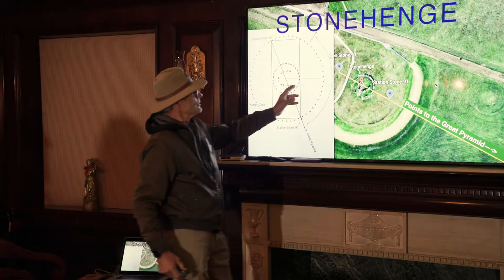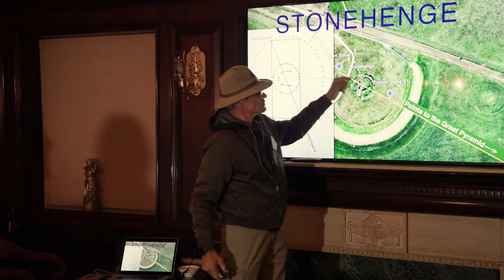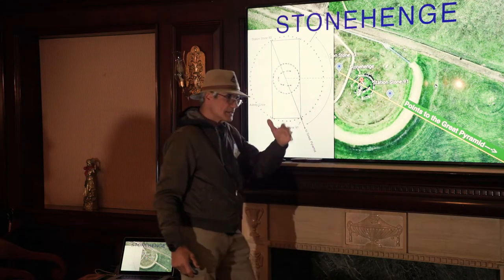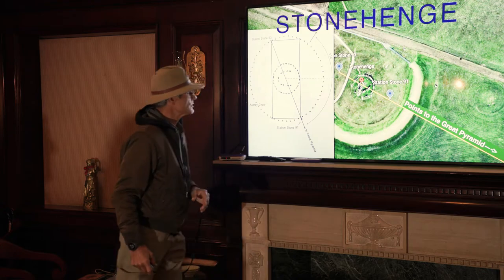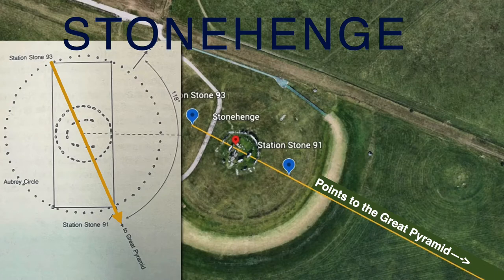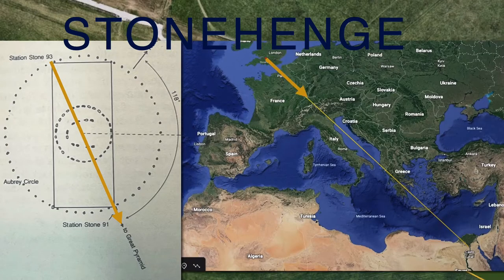So Stonehenge — two of the station stones point directly to the Great Pyramid. There are a lot of connections between Stonehenge and the Great Pyramid. If you go from Station Stone 93 through 91, it points directly to the Great Pyramid. There's a line I drew on Google Earth from Stonehenge to the Great Pyramid.